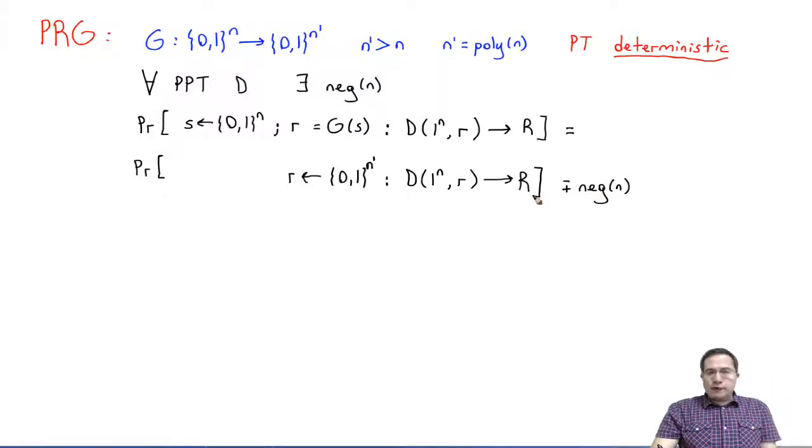One very important thing that people keep forgetting is that a pseudo-random generator produces random-looking outputs as long as the input seed is random. That is very important. If the input seed is not random, this PRG security definition does not provide us with any security. It provides us with indistinguishable from random output of the same length only if our input was itself random.